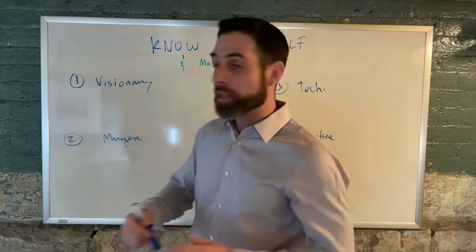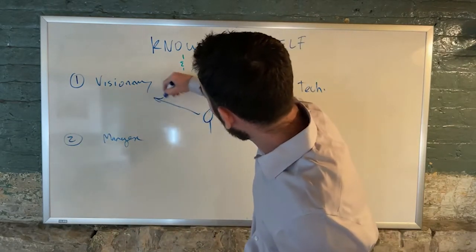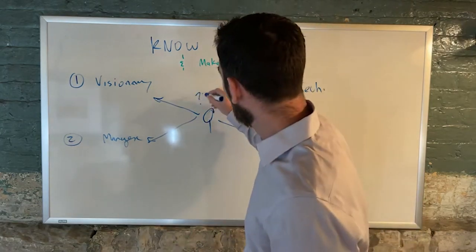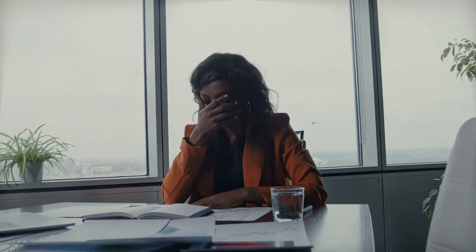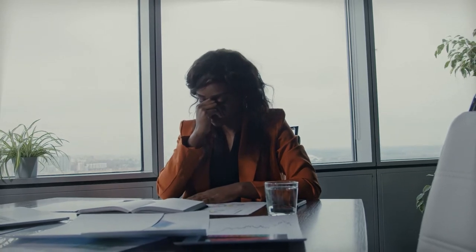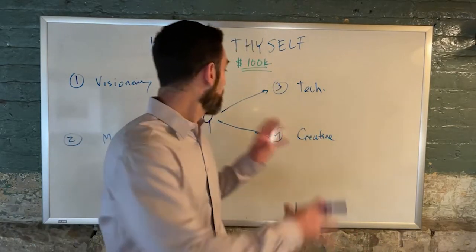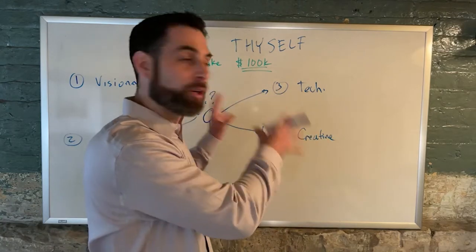Now, here's the issue. A lot of realtors, guess what? They wear all four of these hats simultaneously, and they wonder why they can't make it past doing 10 deals a year. You guys, it's simple. The capacity isn't there.